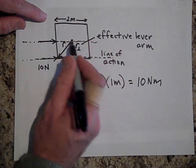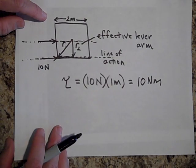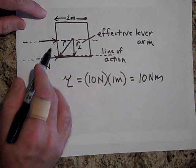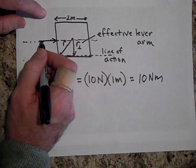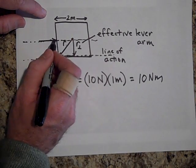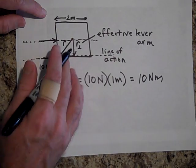When the line of action goes through your axis, there's never a torque associated then with that force. So that gives you no torque. You can push as hard as you want on it that way, and you're not going to get this thing to rotate.